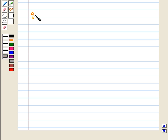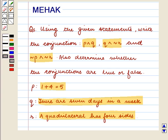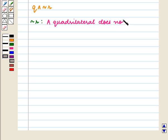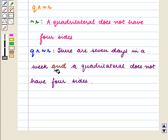Now we write Q and not R. We have the statement Q: there are 7 days in a week, and the statement R: a quadrilateral has 4 sides. To write Q and not R, we first write the negation of R. So not R will be: a quadrilateral does not have 4 sides. Therefore Q and not R will be: there are 7 days in a week and a quadrilateral does not have 4 sides.